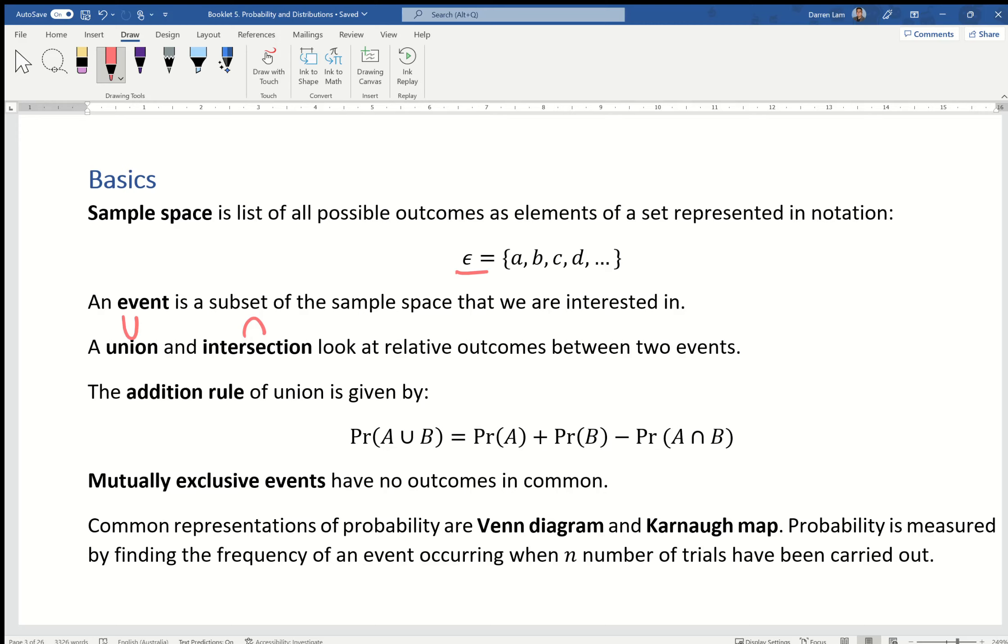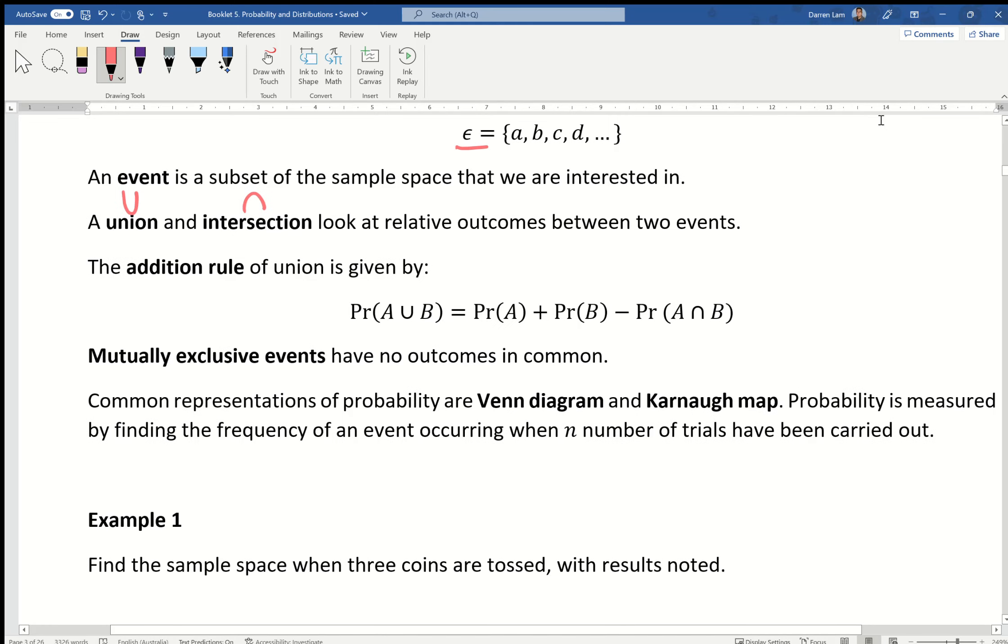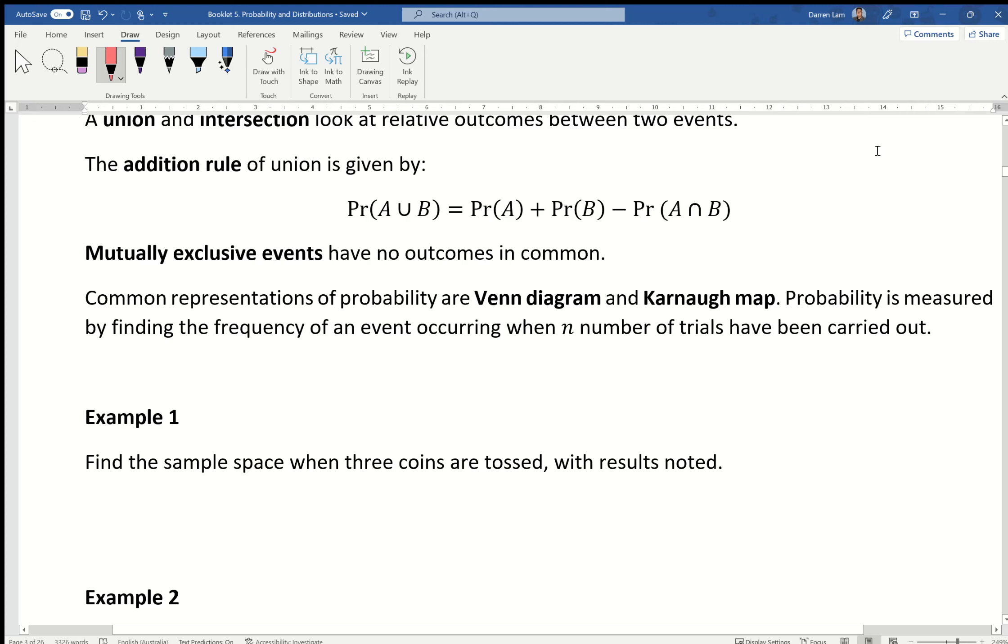Mutually exclusive is a term that you'll hear quite often, both in everyday life and in these math questions. Mutually exclusive just means two events that don't overlap in any sense. We use Venn diagrams and Karnaugh maps. We need to make sure we know how to use both because in an exam they might say specifically use a Karnaugh map or use a Venn diagram.